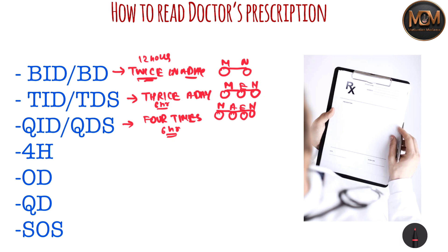Another abbreviation is 4H — once you see 4H it means you have to take that medicine after every four hours. OD means you have to take that medicine once in a day. QD means you have to take that medicine every day.